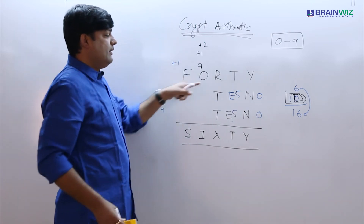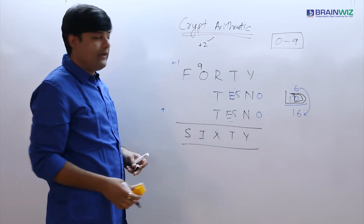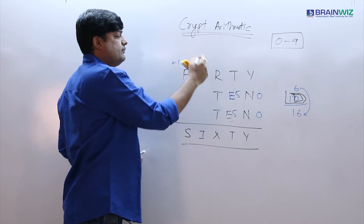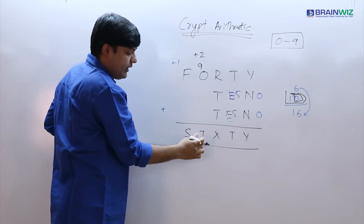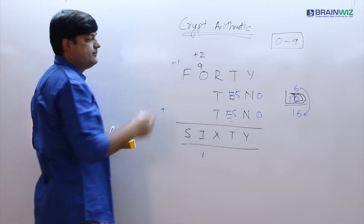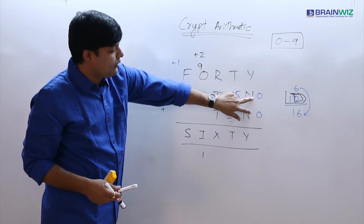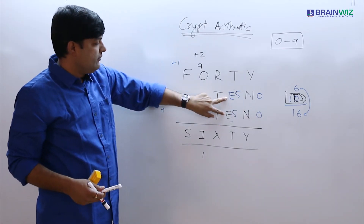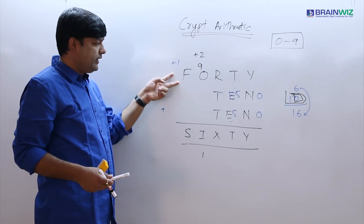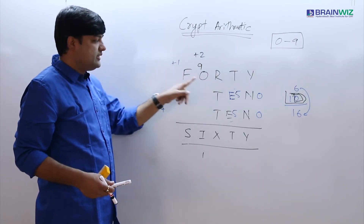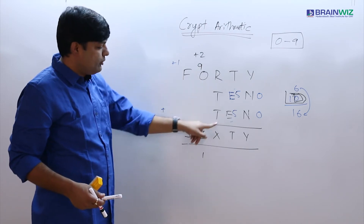So the carry cannot be 1; the carry must be 2. With a carry of 2, that is fine. So 9 plus 2 makes 11 — you have 1 here and 1 is the carry out. So N equals 0, E equals 5, O equals 9, and F plus 1 equals S with that carry of 2 coming in.